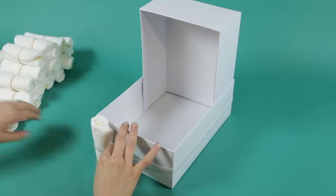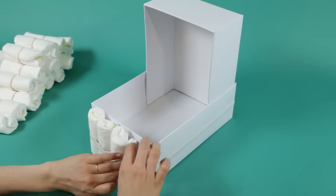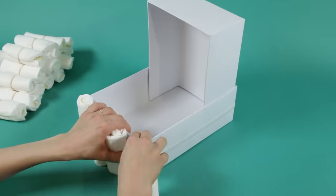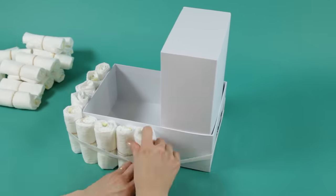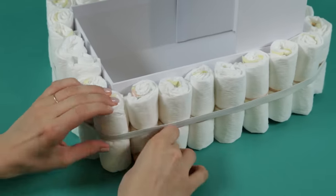Slide each rolled diaper under the elastic on the box. Keep at it until the entire circumference of the bottom box is covered with rolled diapers.